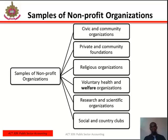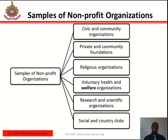Let's explain these one after the other. Under civic and community organizations: civic organizations are comprised of people who are joined together to provide services to their community. Non-profit organizations are considered civic organizations because they are formed for the purpose of servicing a public or mutual benefit other than the pursuit and accumulation of profits for their owners or investors. Non-profit organizations take various forms such as charities, foundations, social welfare or advocacy groups, professional or traders associations, and religious organizations.